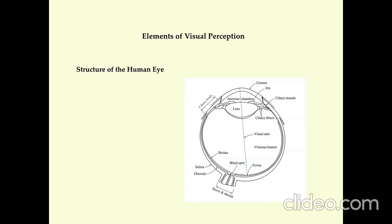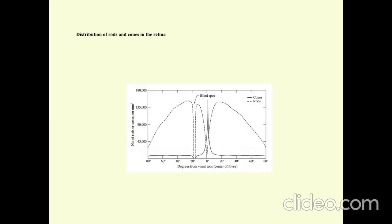Elements of Visual Perception. This is the structure of the human eye. Distribution of rods and cones in the retina.